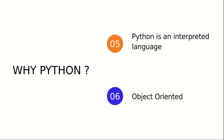The next point is it's object-oriented. Python supports both procedure-oriented programming as well as object-oriented programming. In procedure-oriented languages, a program is built around procedures or functions, which are nothing but reusable pieces of code. In object-oriented languages, a program is built around objects, which combine data and functionality. Python has a very powerful but simple way of doing object-oriented programming concepts, especially when compared to other languages like C++ or Java. It actually supports both procedure-oriented and object-oriented programming.